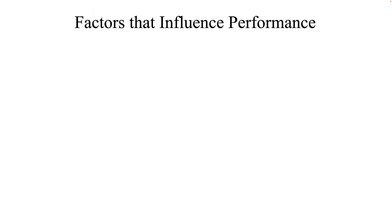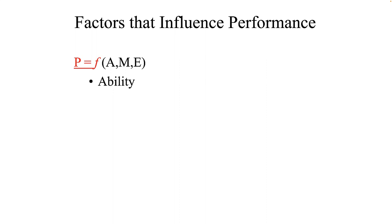This is the classic formula for performance. Performance is a function of ability, motivation, and the environment in which performance operates. Ability includes things like technical skills, interpersonal skills, problem solving, analytical skills, communication skills, and even sometimes physical limitations. Most of these things can be learned, but some are fairly innate.